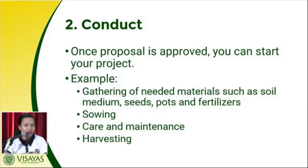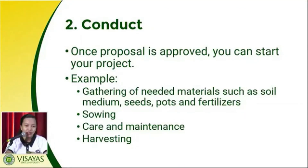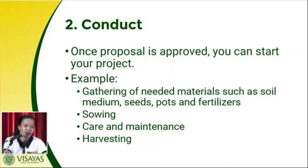Since this is under agriculture, an example is gathering needed materials such as soil medium, seeds, pots, and fertilizers. Your skill of being resourceful will be used in this step. For soil medium, if you have composting in your area or a rice farm, you can use it together with garden soil. Seeds are a very important input to start your project.